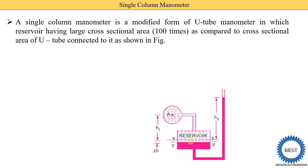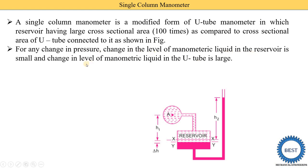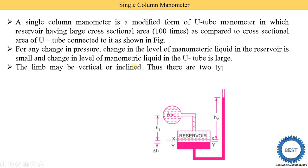For any change in pressure, the change in level of manometric liquid in the reservoir is small, while the change in level in the U-tube is larger. This happens because the area of the reservoir is larger, so small deflection occurs there, whereas the area of the manometric tube is smaller, so large deflection takes place. The limb may be vertical or inclined.